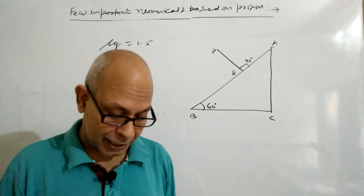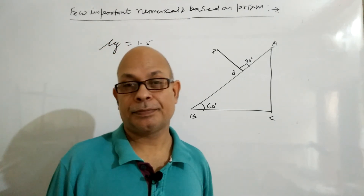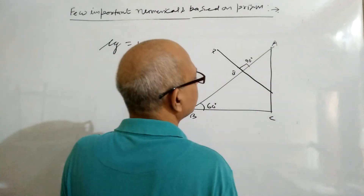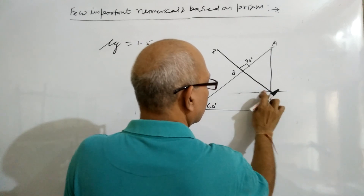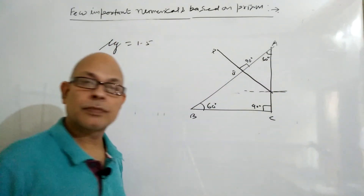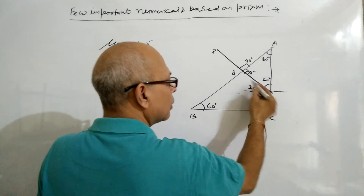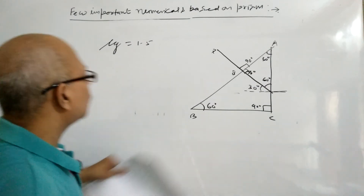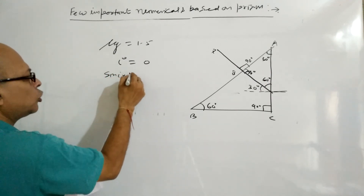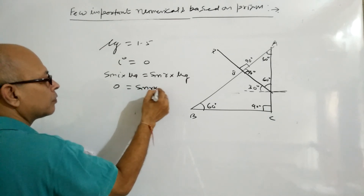The prism angles are 60°, 90°, and 30°. The angle of incidence at the AB face is zero. Applying Snell's law: sin(I) × μ = sin(R) × μ_g gives sin(0) = 0, so R is also zero. I and R are both zero at the entry face.